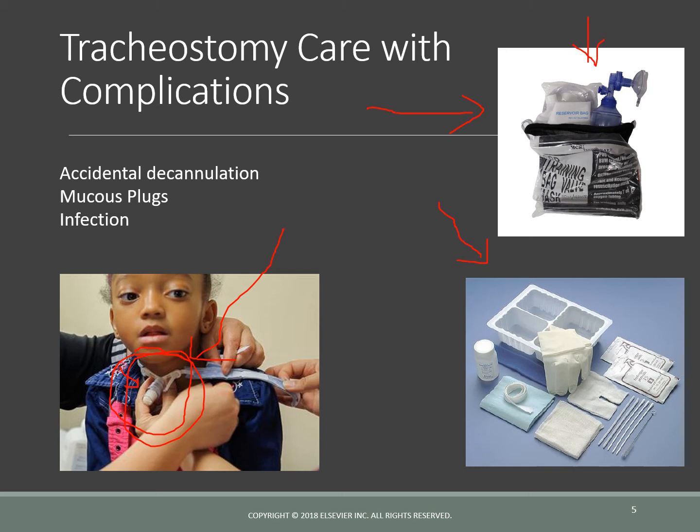Another thing we need to have at all times is a suction source — a suction canister, the regulator, the tubing, and it needs to be connected to a Yankauer.